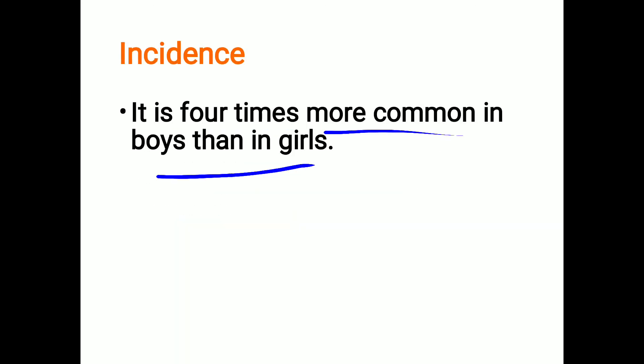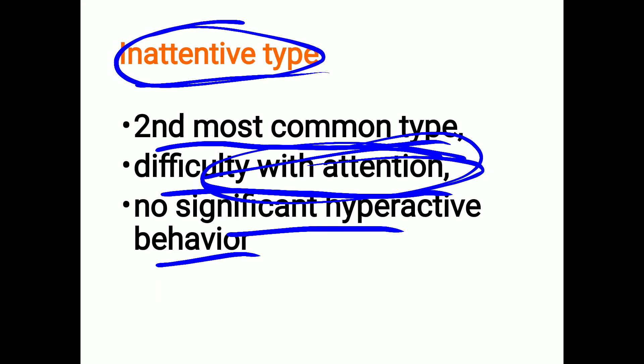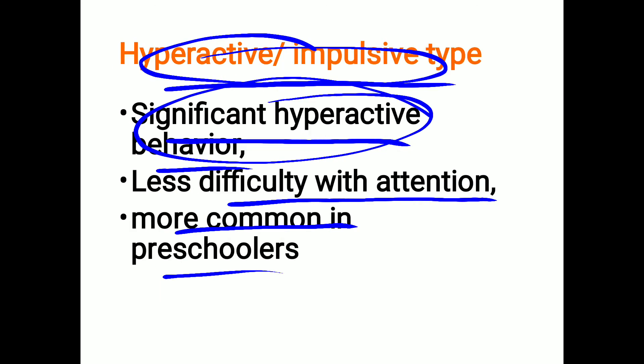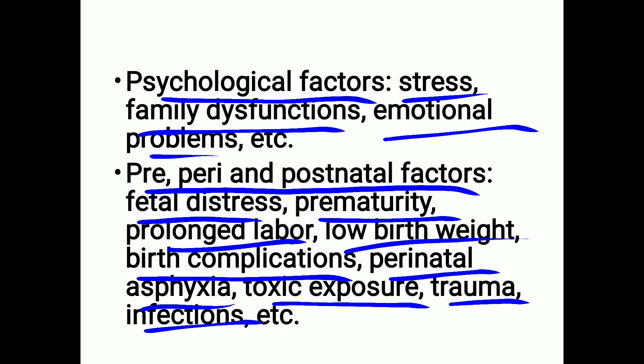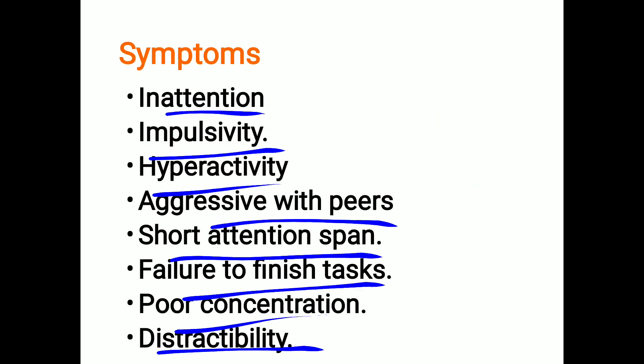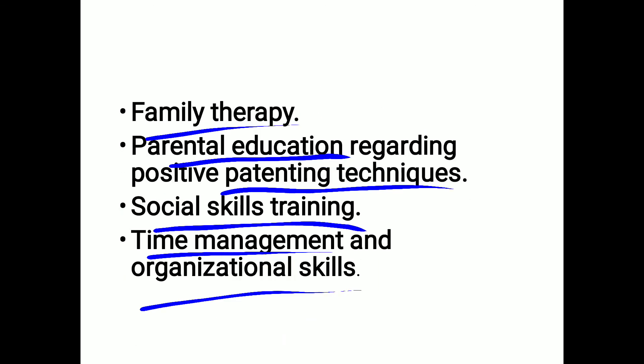To summarize, today we discussed the definition of ADHD, its incidence, and its three types: inattentive type, hyperactive-impulsive type, and combined type. We also covered etiological factors, symptoms, and treatment. Thank you very much.